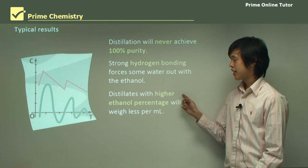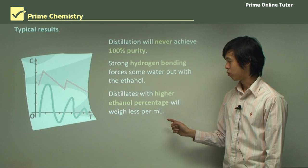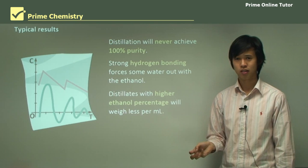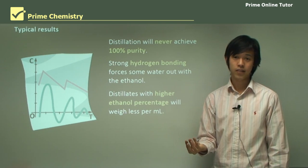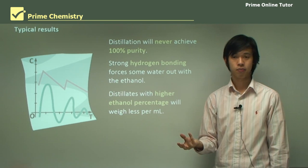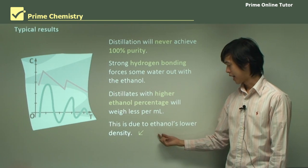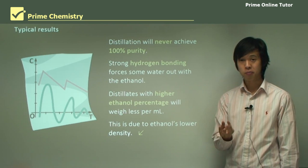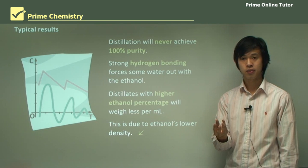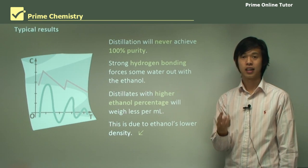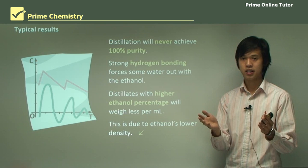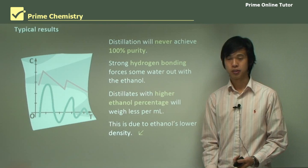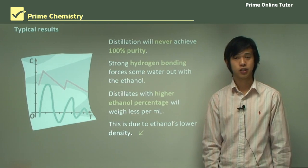So what we will notice is distillates with higher ethanol percentage will weigh less per milliliter. So let's say we collect 10 ml and it has more ethanol than someone else. We will weigh it and we'll find that it will weigh less. And that's because ethanol's density is lower than the density of water. So for the same volume of ethanol, if there's more ethanol, it will be less dense. And if it's less dense, then it will obviously weigh less, because there's not as much matter in the same volume.